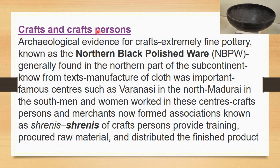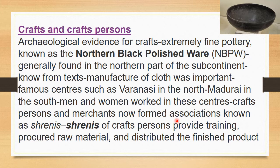Crafts and craftspersons: Archaeology has provided evidence for crafts. Extremely fine pottery, the Northern Black Polished Ware, is famous and found in the northern part of the subcontinent. The manufacturing of cloth was also important, with famous centers such as Varanasi in the north and Mathura in the north-west. Craftspersons and merchants formed associations called shrenis, which provided training, supplied raw materials, and distributed finished products.